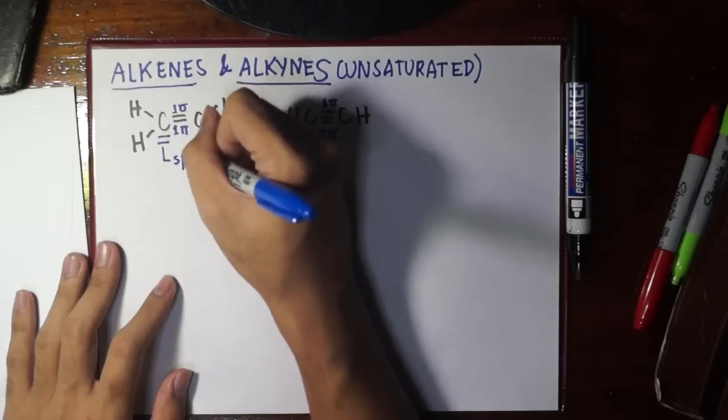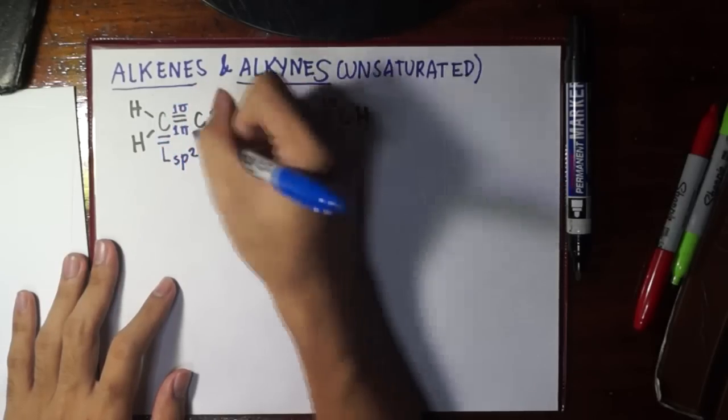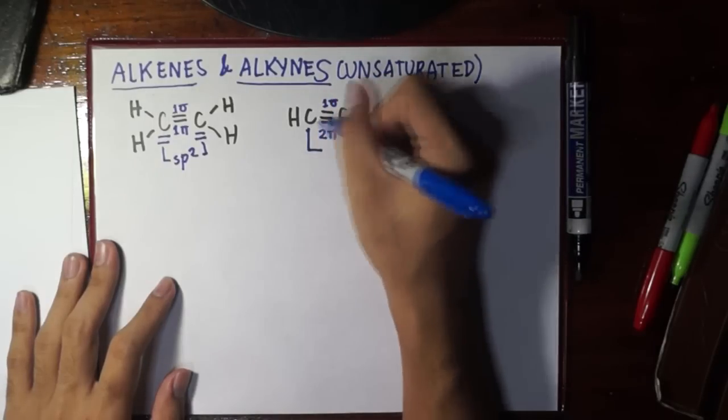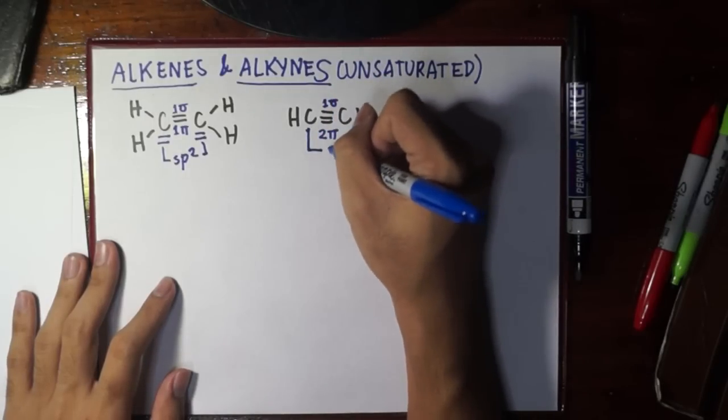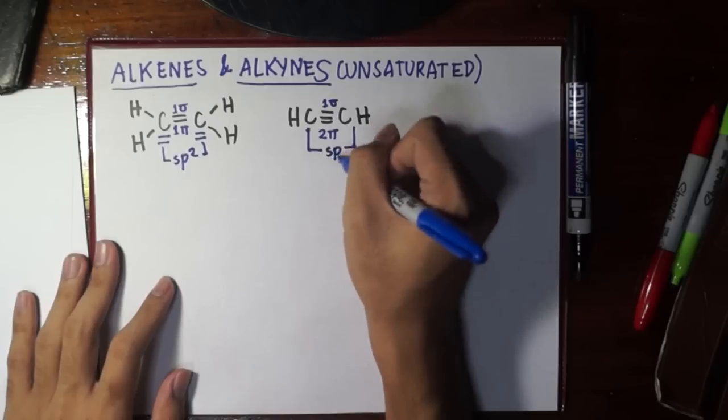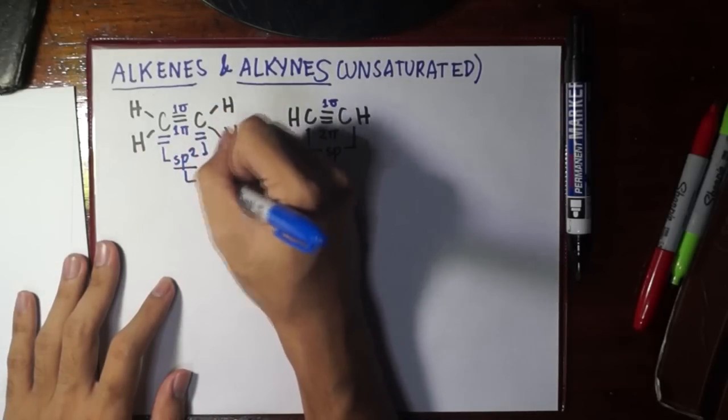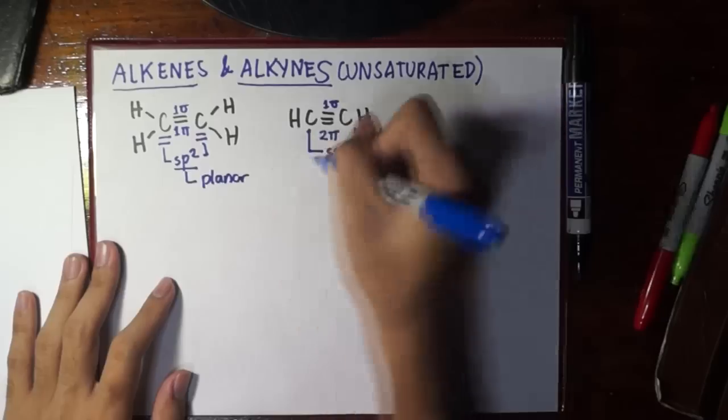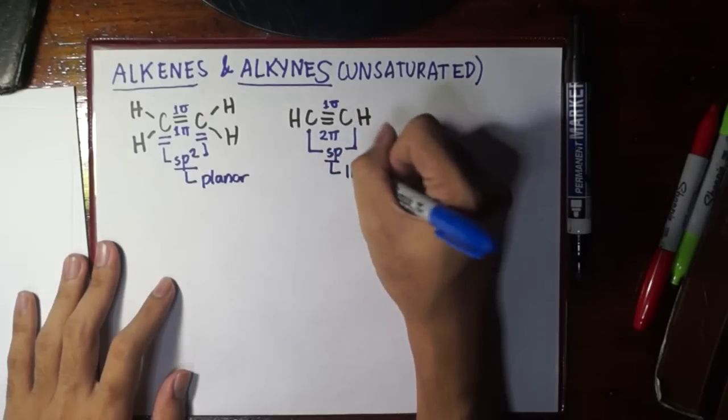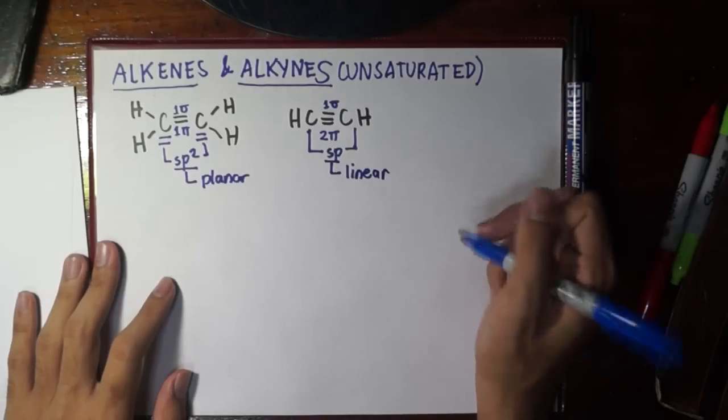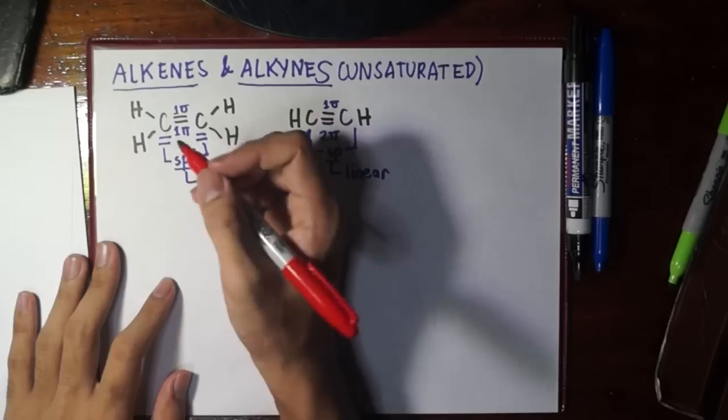If we look at the carbon for ethene, it has one pi bond so we should assume this is SP2 hybridized. For ethyne, both carbons have two pi bonds each, so they should be SP hybridized. If we have SP2 it should be planar geometry; if we have SP it should have linear geometry.